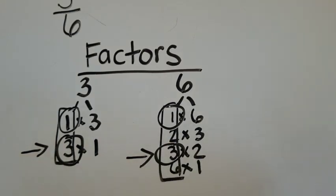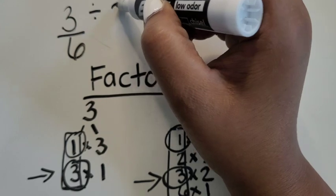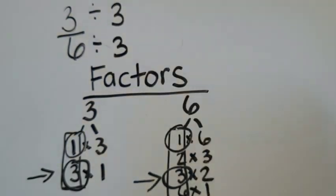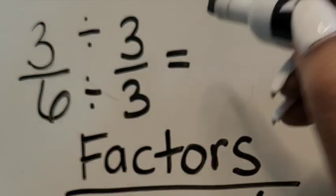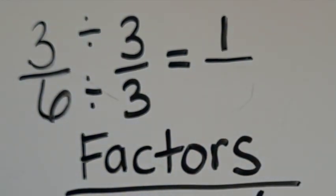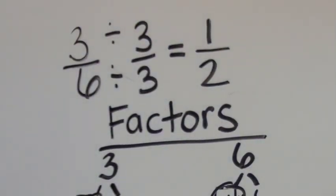3 is the greatest common factor that they have. So we're going to use 3 to divide both the numerator and the denominator by equally. 3 divided by 3 equals 1. 6 divided by 3 equals 2. So a simplified fraction for 3 sixths is 1 half.